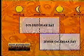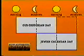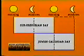The Hebrew calendar is a combined solar-lunar calendar in that it strives to have its years coincide with the tropical year and its months coincide with the synodic months.